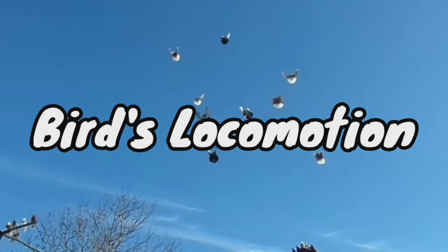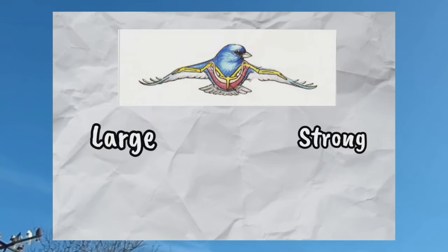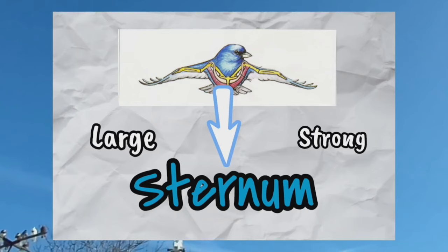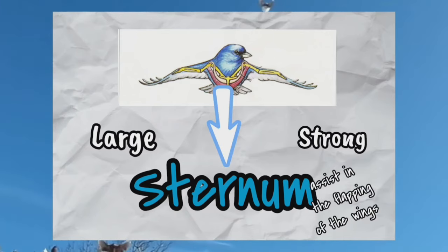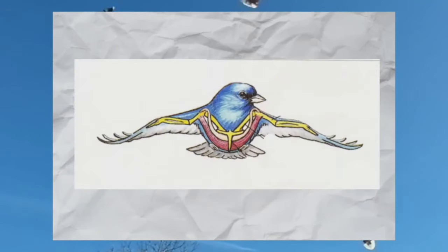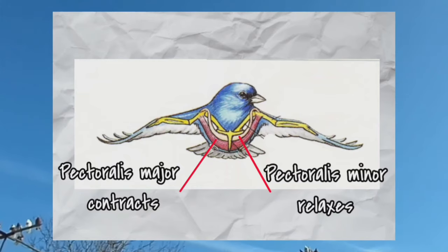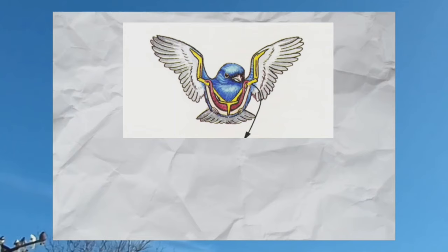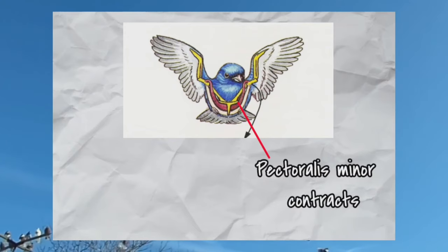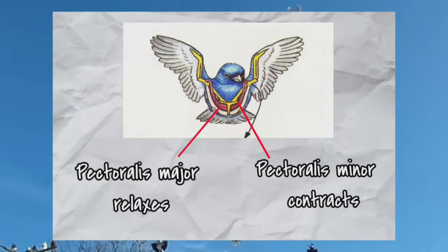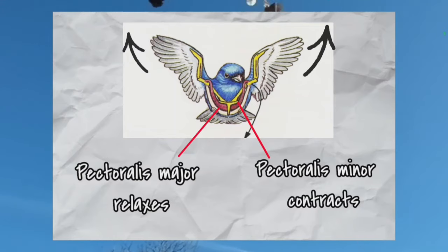Birds have a large and strong antagonistic muscle called the sternum on the chest that assists in the flapping of wings. When the pectoralis major contracts and the pectoralis minor relaxes, the wings are pulled down. When the pectoralis minor contracts and the pectoralis major relaxes, the wings are pulled up.